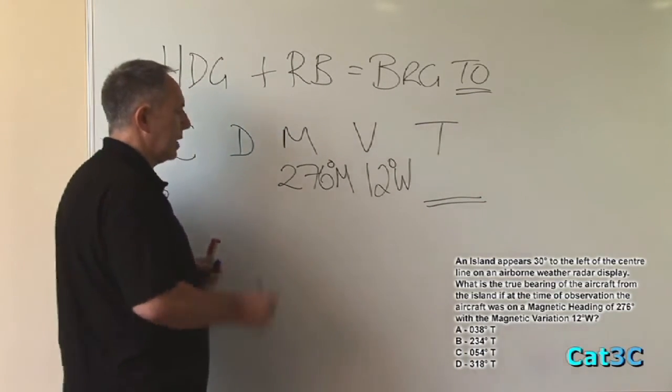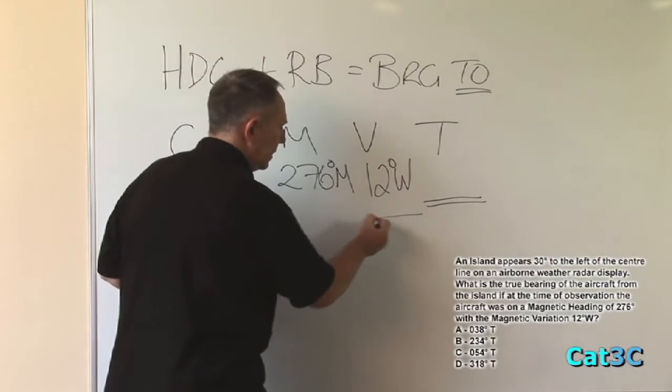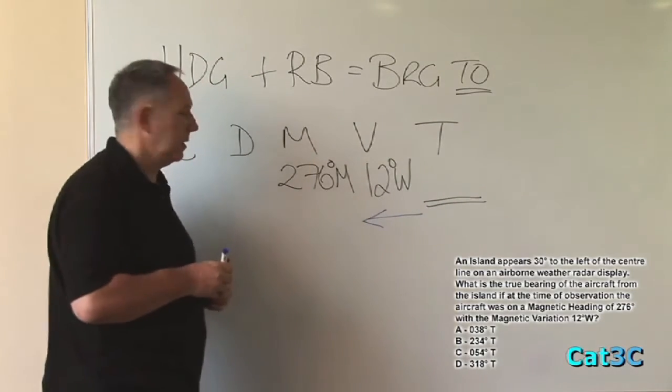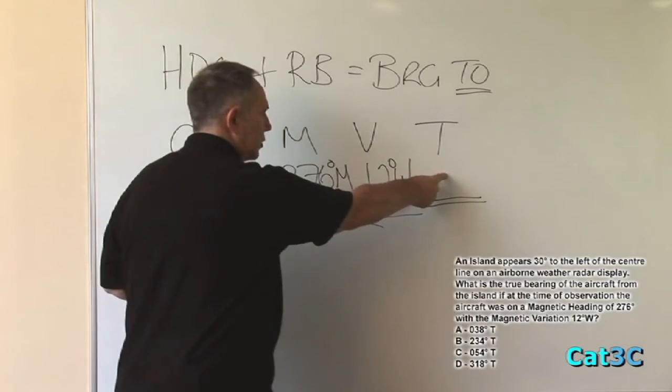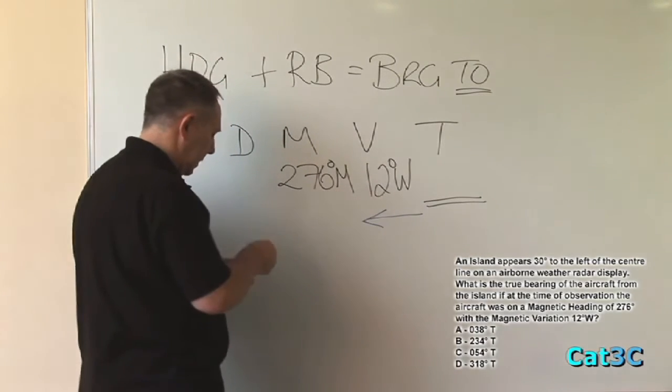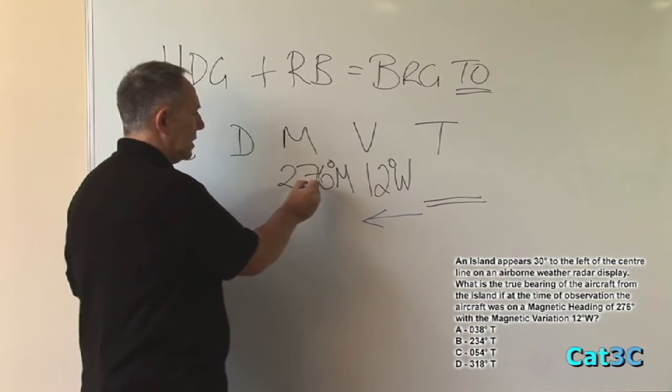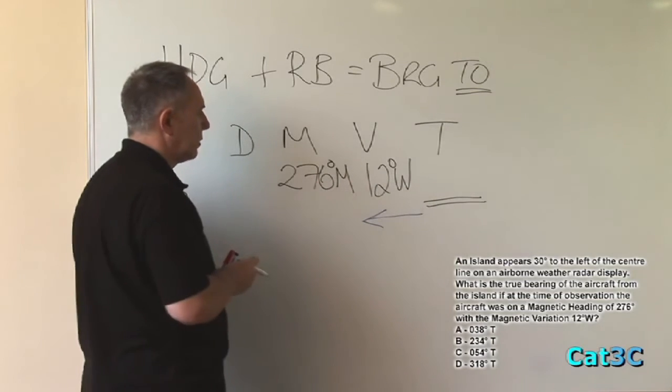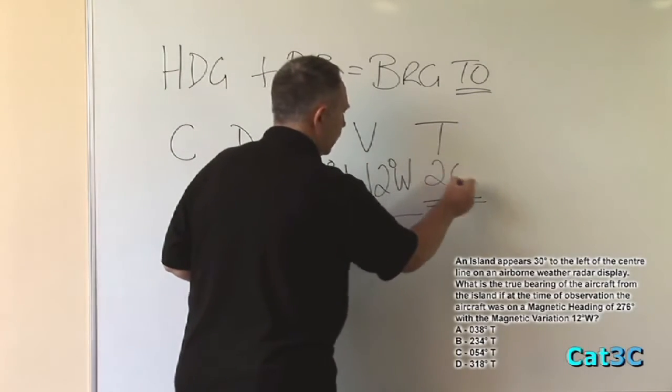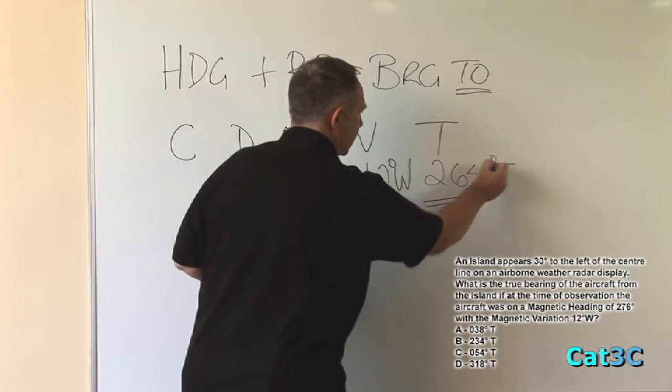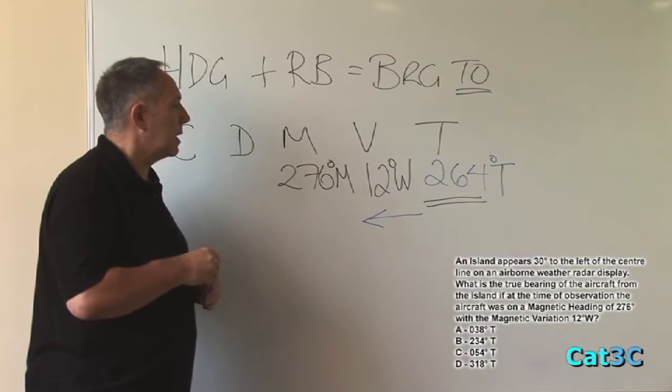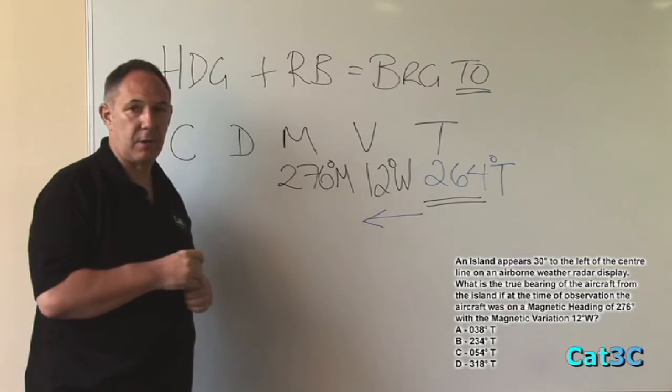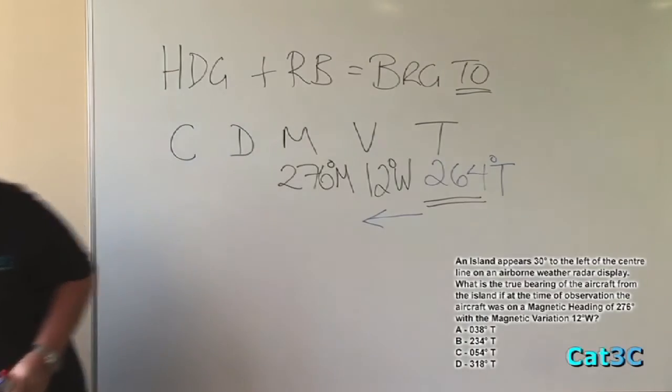Identify the direction of the variation being westerly. The arrow points to the left, meaning that as the arrow always points to the larger number, magnetic is greater than true by 12. 276 degrees magnetic minus 12 degrees west gives us 264 degrees true. So that is the true heading of the aircraft. Now, I'm going to clean this section off so we can proceed.